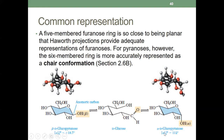Both sugars are chiral. D-glucose is dextrorotatory — it can rotate the plane of polarized light to positive 18.7 degrees. The alpha form has a specific rotation of positive 112 degrees.